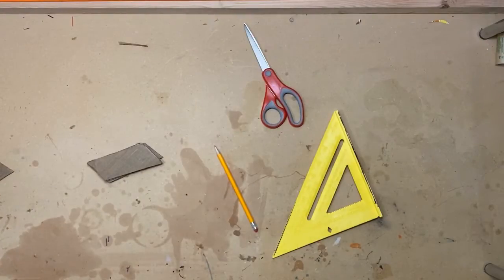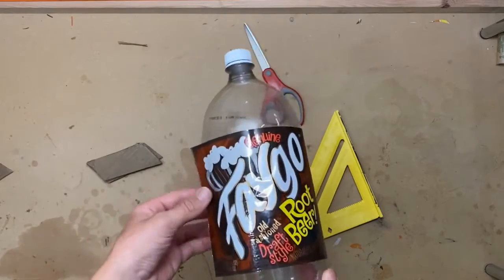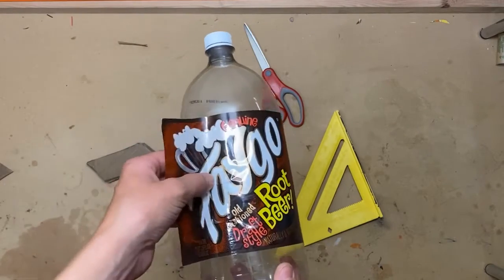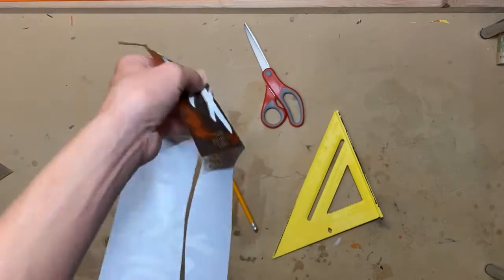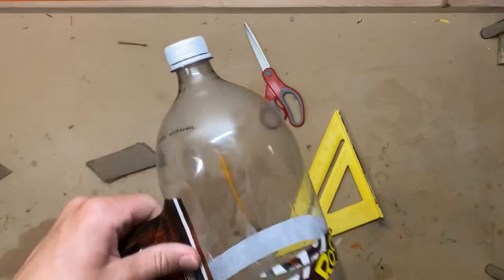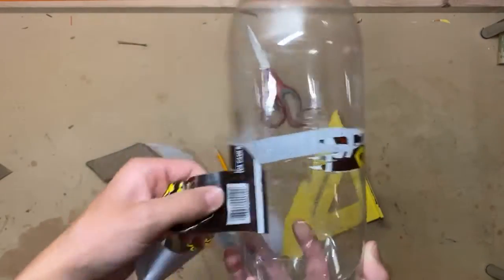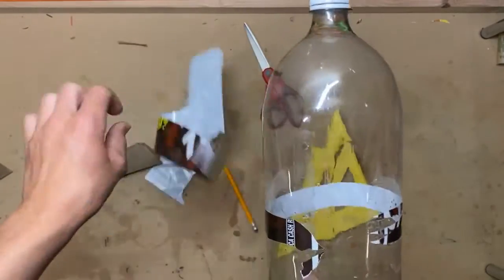Now that your fins are cut out, take your 2-liter bottle, rip the plastic logo off of it, just like that, and then peel off any of this extra stuff. Once you have that done...